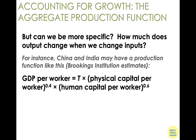We also have parameters — 0.4 and 0.6 — in the production function. These numbers indicate the importance of physical capital and human capital respectively. In general, a larger parameter value means that factor is more important in driving productivity.